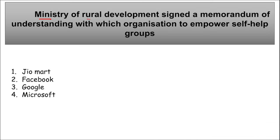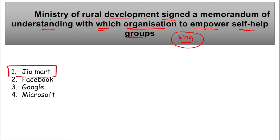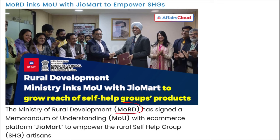Next: Ministry of Rural Development signed an MOU with which organization to empower self-help groups? It is JioMart. Ministry of Rural Development and JioMart — an e-commerce platform — signed an MOU to encourage self-help groups by providing various economic activities, job opportunities, and skills to these groups.